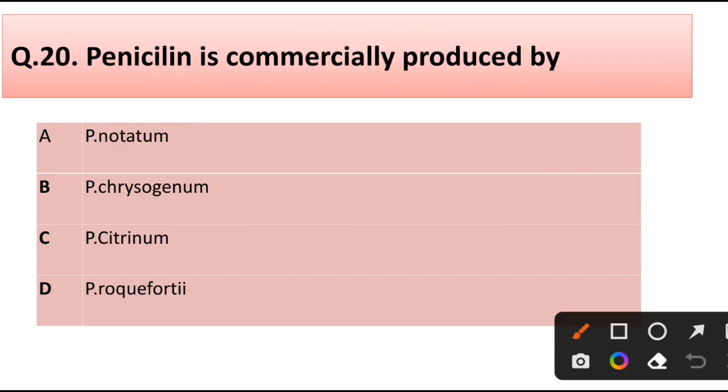Question number 20. Penicillin is commercially produced by—correct answer is option B, Penicillium chrysogenum.